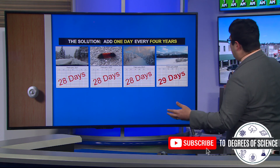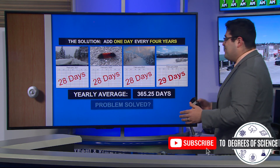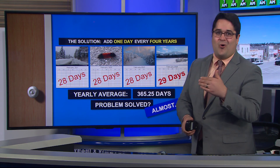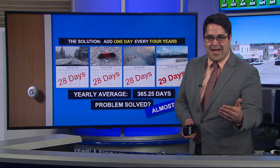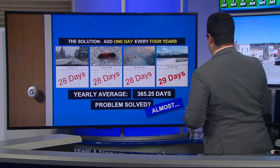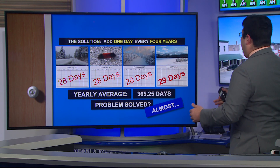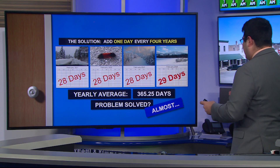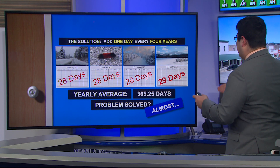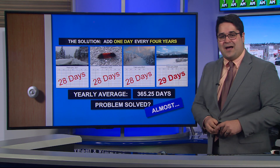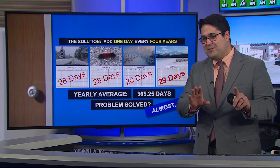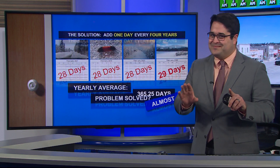So how do we fix that? Well, since we have an extra quarter of a day every single year, we add one day every four years. That makes the yearly average 365.25 days. Problem solved, right?